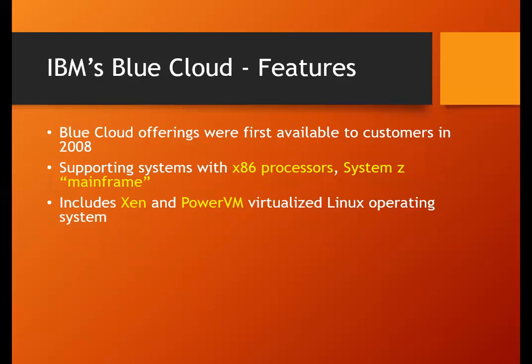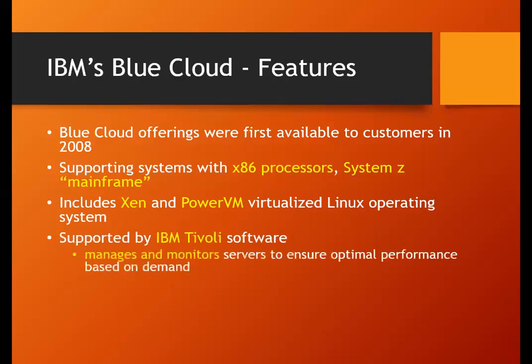They developed it on Linux because they wanted to approach open source software. So Xen and Power VM were developed and used as virtualized machines for hosting applications on the servers. IBM also had a great software called IBM Tivoli — this is something new you might be hearing here.